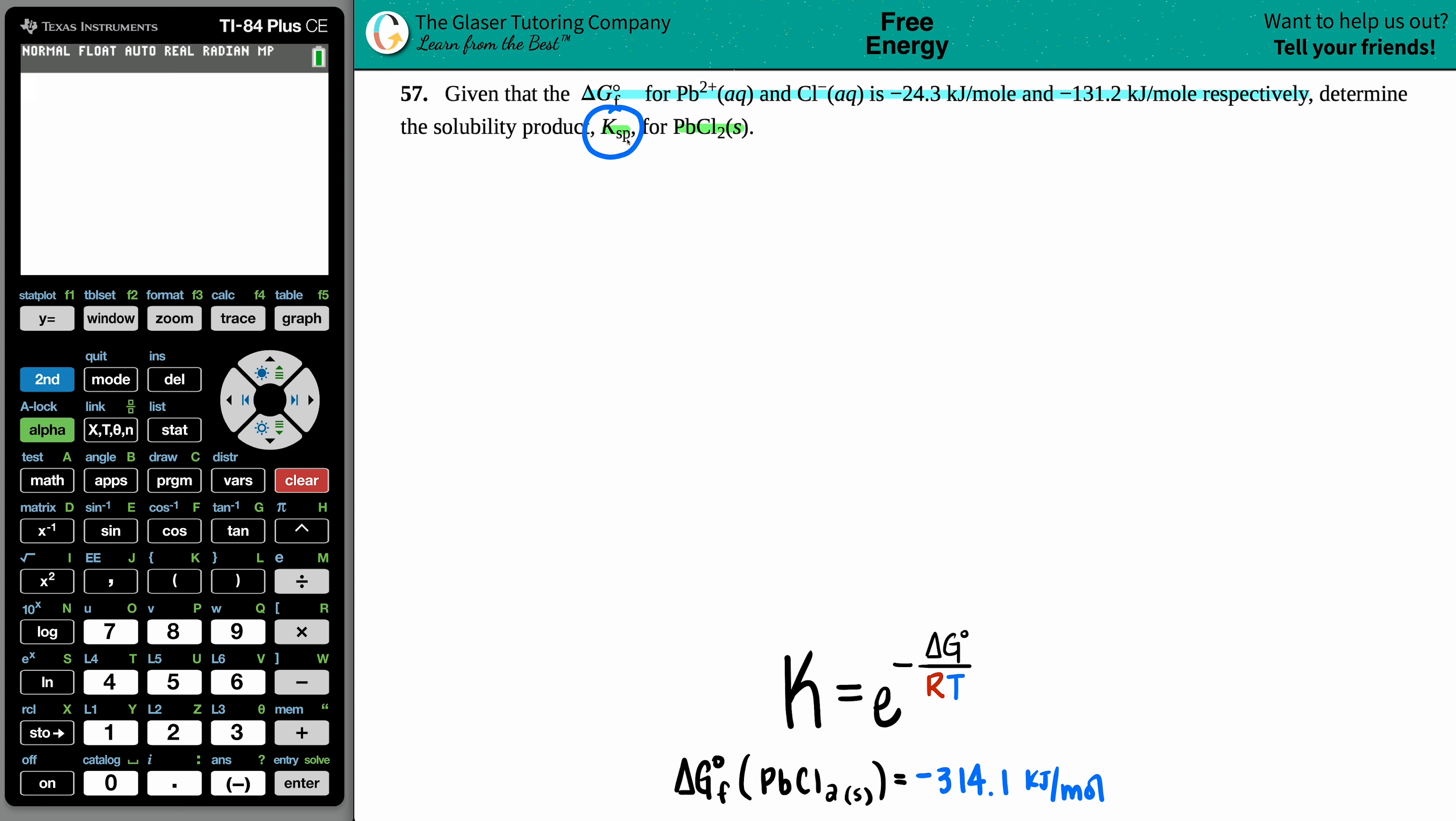The solubility product is a capital K, an equilibrium constant. When I think of equilibrium values and delta G, there's only one formula between them: equilibrium constant K equals e raised to the negative ΔG divided by RT. Let's just bring this up.